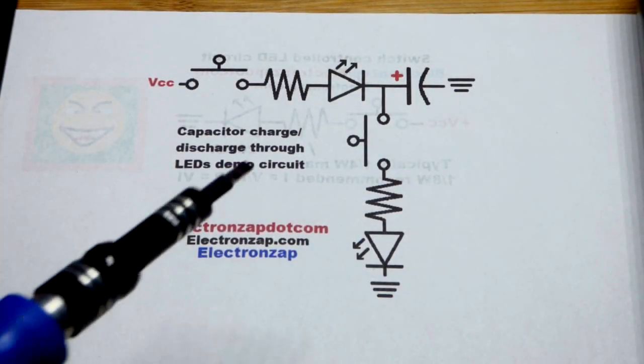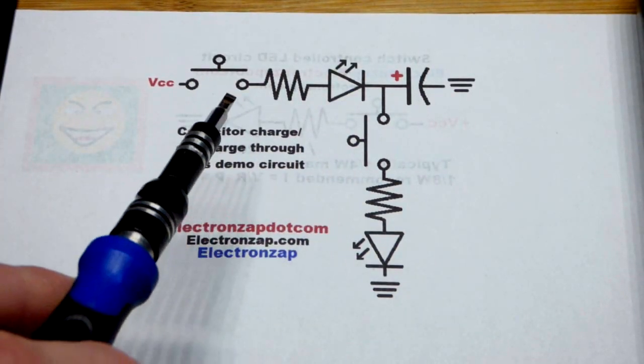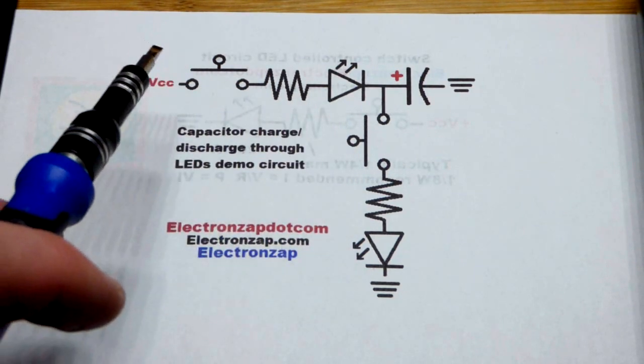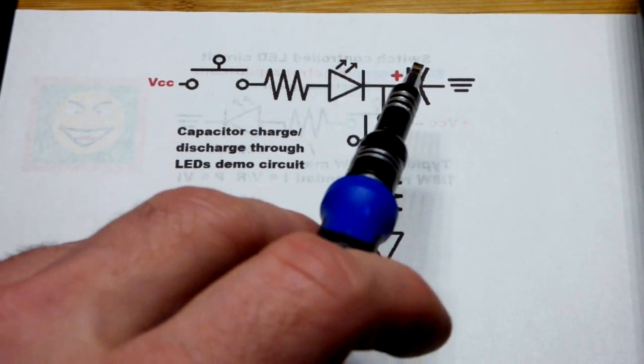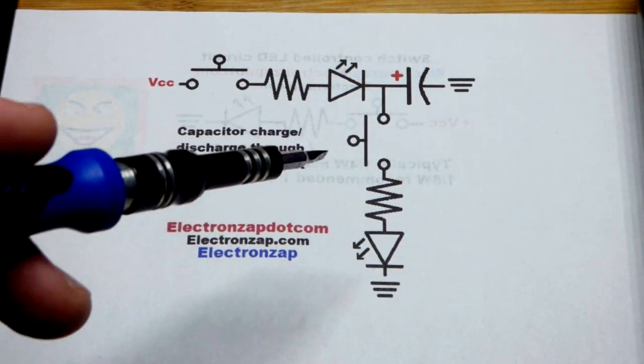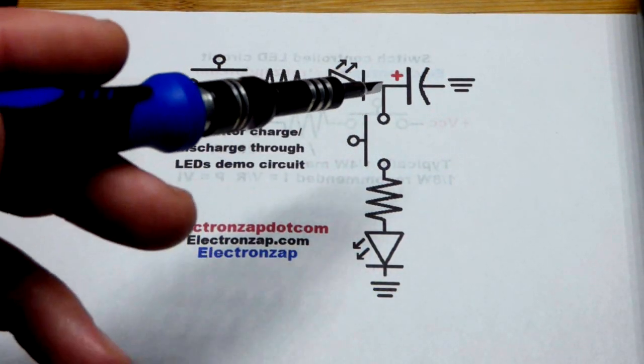In this video, we're going to charge a capacitor. We're going to charge it through an LED that's controlled by a switch, protected by a resistor, of course. And then we're going to discharge the capacitor.